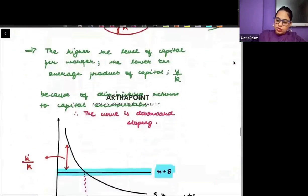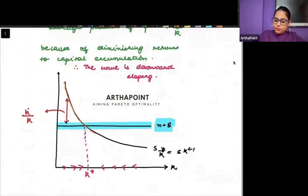So I have taken a downward sloping curve. And this downward sloping curve is s upon k to the power 1 minus alpha.